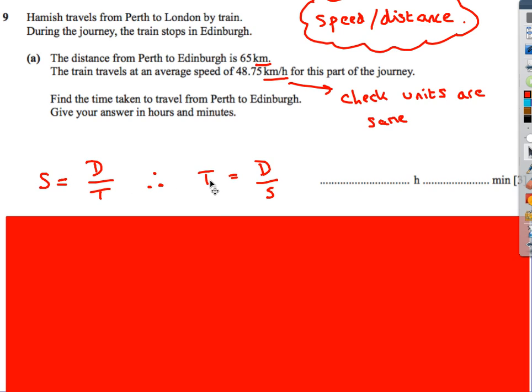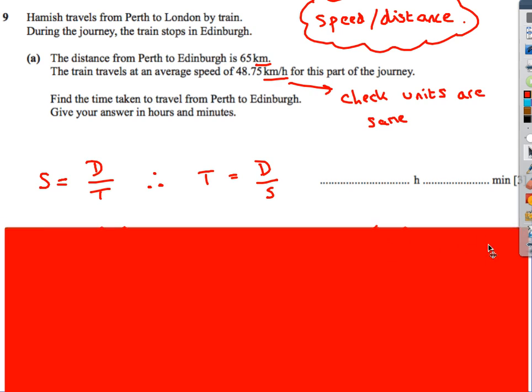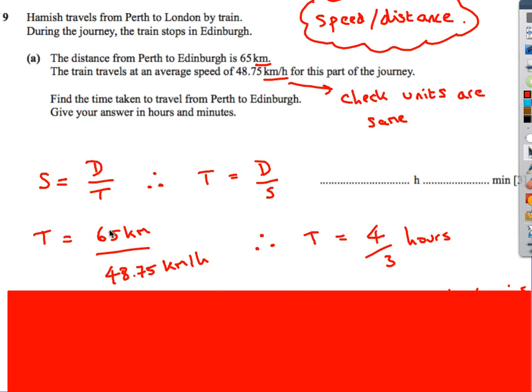If you rearrange that, we've got time equals distance over speed. I want the time taken, so I'm going to use this formula. I know that the distance is 65. I know that the speed is 48.75. The units are all fine at the moment. So 65 kilometers over 48.75 kilometers per hour. If I do that on my calculator, I get four-thirds hours.